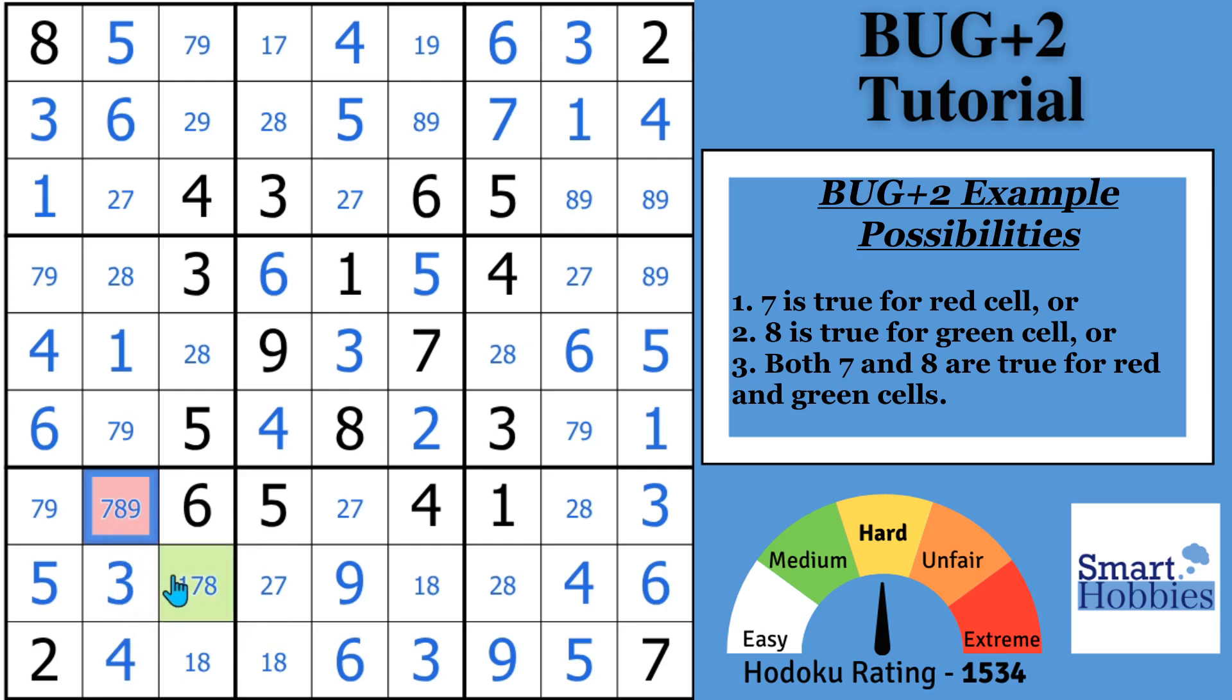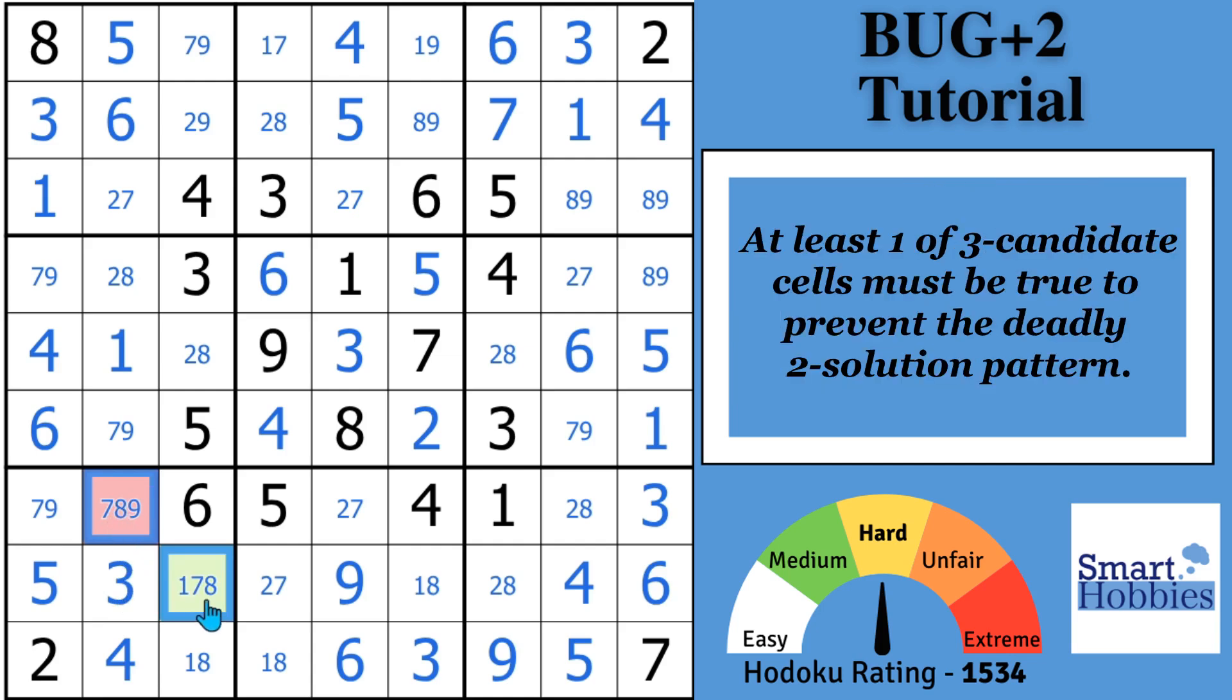So it can be either the seven is there and the eight doesn't have to be in the green, or the eight's here and the seven doesn't have to be in the red, or both of them are true. Okay, so what we can do, and we know that that's the situation, because without the seven or the eight, you end up with the deadly pattern.